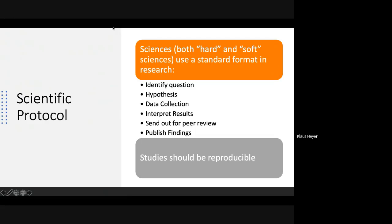There's a standard format that researchers follow in the sciences. You see something that is perhaps correlated, you come up with a hypothesis — an educated guess that A leads to B. Then you design a test and collect data. Once you have data, you interpret it: was your hypothesis correct or incorrect? Then you send it out for peer review, typically submitting it to a journal which sends it to three experts in the field.